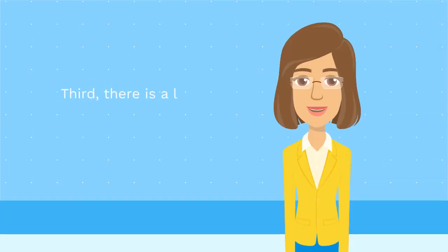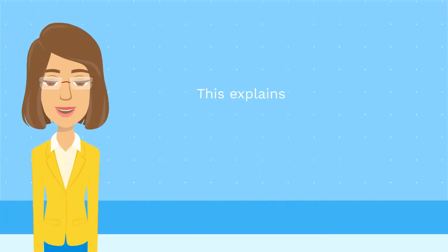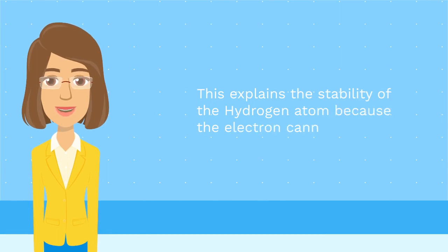Third, there is a larger than zero minimum value of the kinetic energy of an electron in a wave with total energy Ea plus mc². This explains the stability of the hydrogen atom because the electron cannot loss more energy if it is in the corresponding wave.